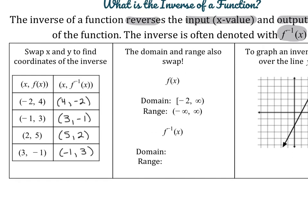Just like the x and y values of coordinates swap, the domain and range will also swap. If we have a function f(x) whose domain is from negative 2 to infinity and whose range is all real numbers, the domain and range literally swap. So the domain of f inverse of x becomes negative infinity to positive infinity, and the range becomes negative 2 to infinity.